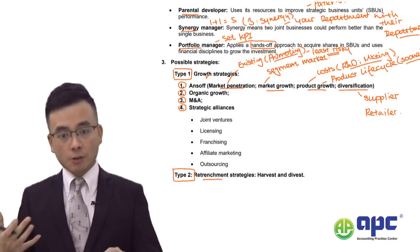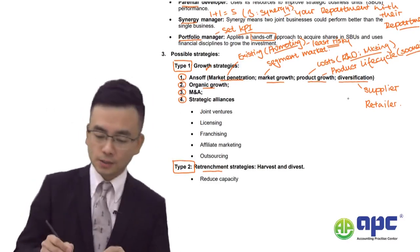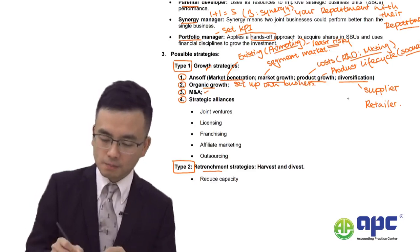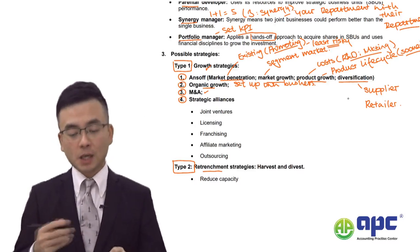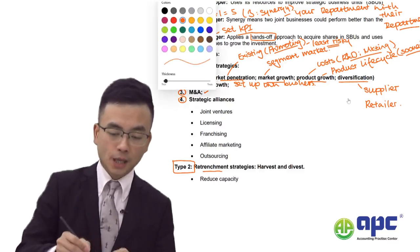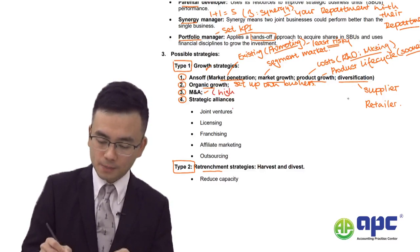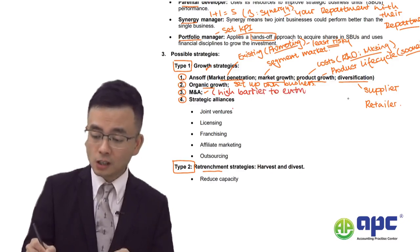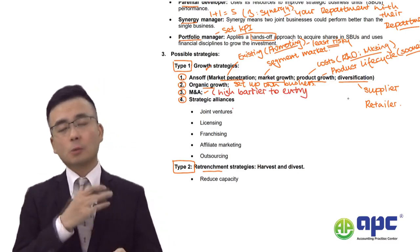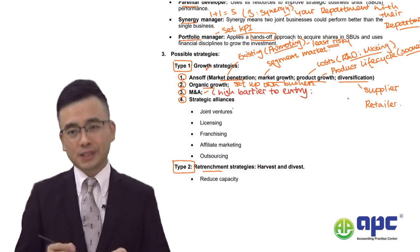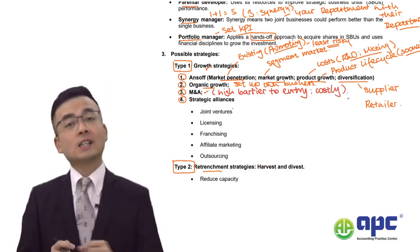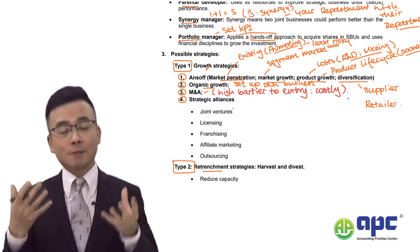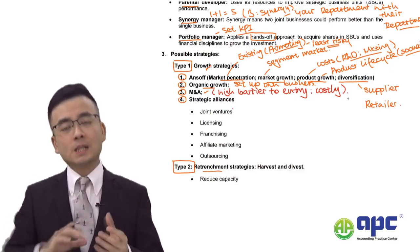On the flip side, you can grow your business using organic growth, which means setting up your own business. Alternatively, mergers and acquisitions — think about when to buy another company. When there is a very high barrier to entry, meaning you can't really grow your business in a short amount of time, why not buy the existing company instead? However, it will be quite costly — a lot of the time you will need to pay a premium in order to buy another company.